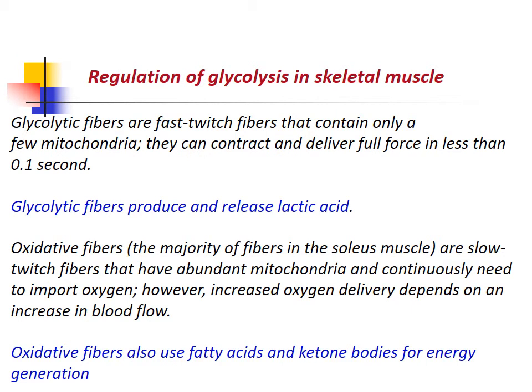Glycolytic fibers are fast-twitch fibers that contain only a few mitochondria and can contract to deliver full force in less than 0.1 seconds — they produce and release lactic acid. Oxidative fibers, the majority in the soleus muscle, are slow-twitch fibers with abundant mitochondria that continuously need oxygen; increased oxygen delivery depends on increased blood flow. Oxidative fibers also use fatty acids and ketone bodies for energy generation.